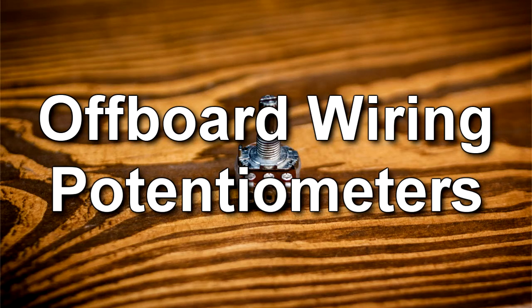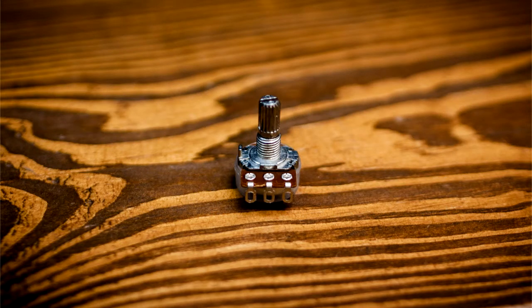Alright, in this tutorial on offboard wiring, I'm going to cover potentiometers. With a potentiometer in this orientation where the pins or lugs are facing towards you, the pins are numbered from left to right: one, two, and three.